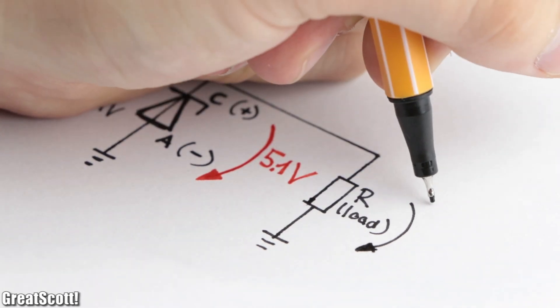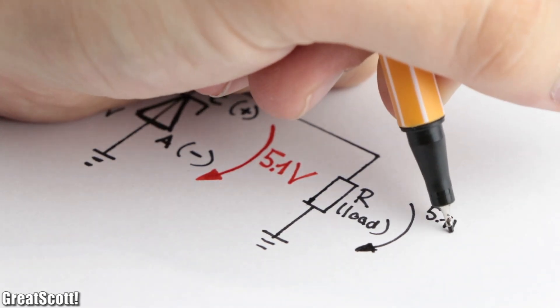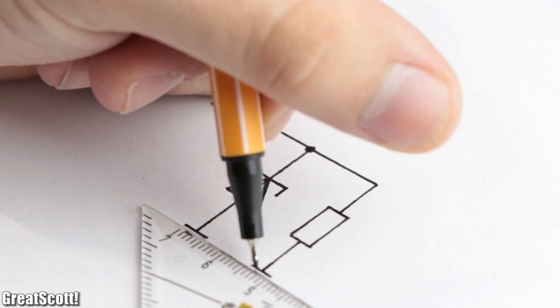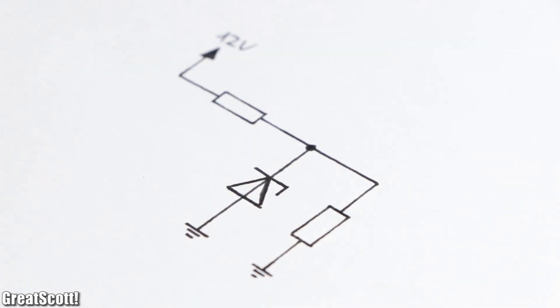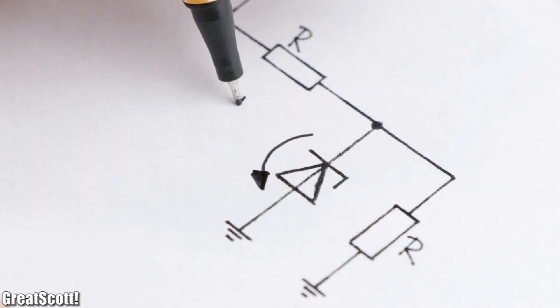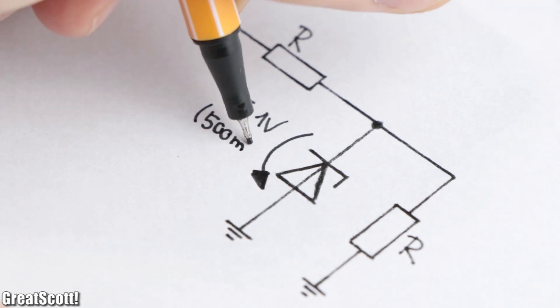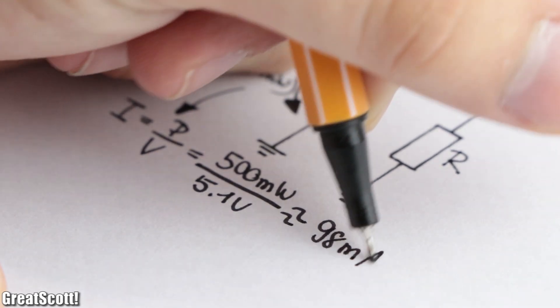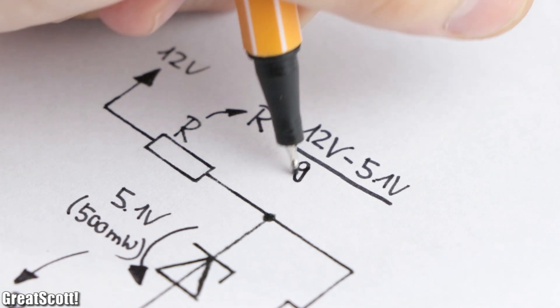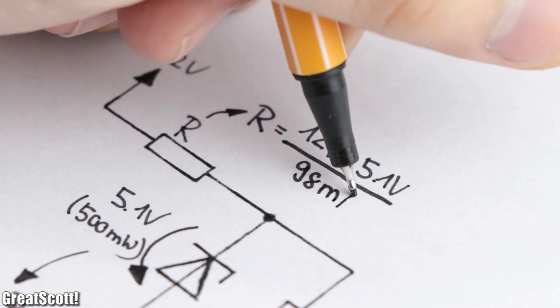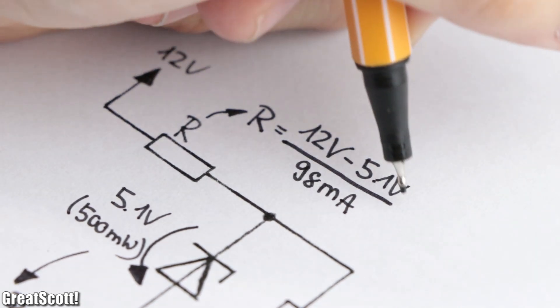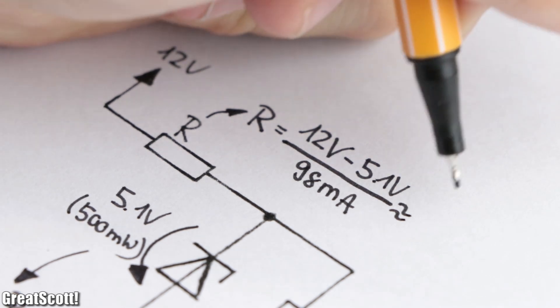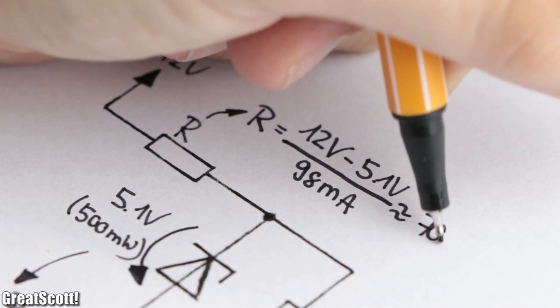This way, we can create a crude voltage regulator or a voltage reference. Here is a simple calculation example. We know that our Zener diode will create a 5.1V voltage drop and can handle 500mW. That means that the maximum current through it is around 98mA, which therefore means the series resistor equals the input voltage minus the Zener voltage divided by the maximum current, which is around 70Ω.